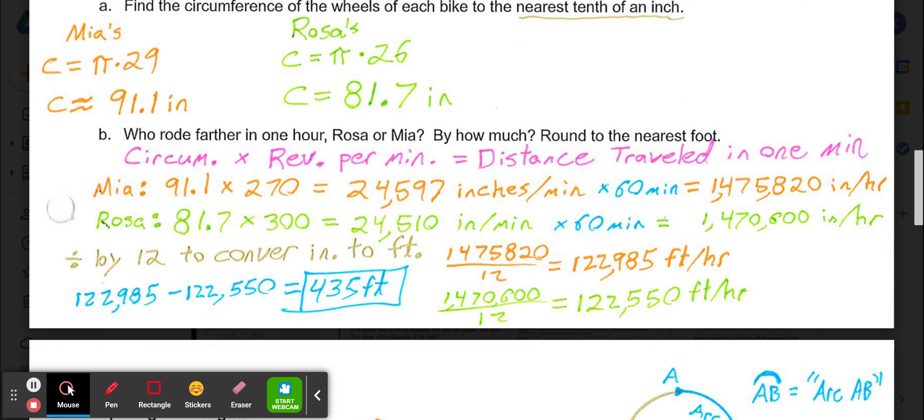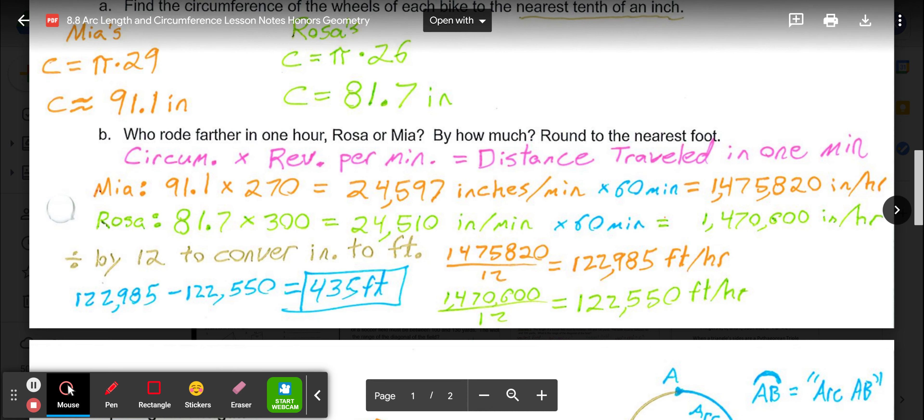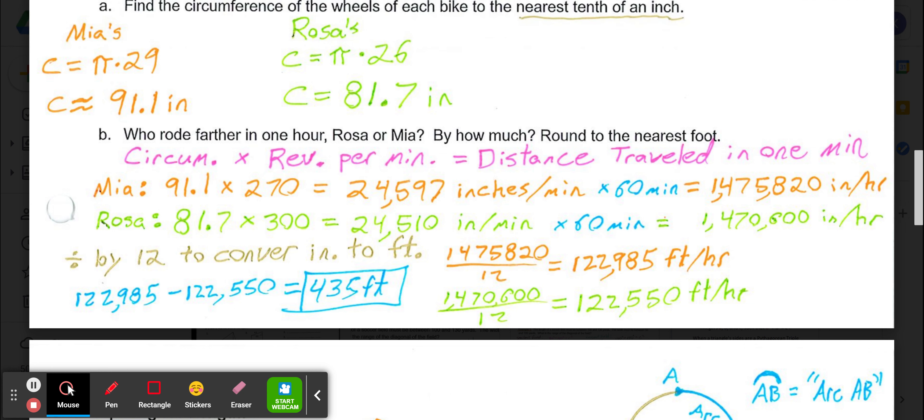If you look at the example in the book, they used the exact circumferences rather than the approximates. They used 29π and 26π rather than these rounded answers and came out with a difference of about 471 feet. That's fine because they didn't clarify to use exact or the approximate, so either way it would technically be a correct answer.